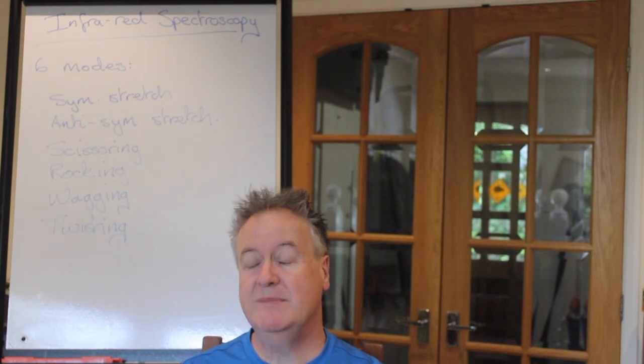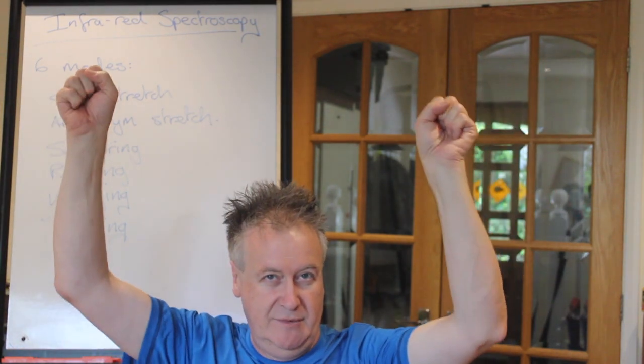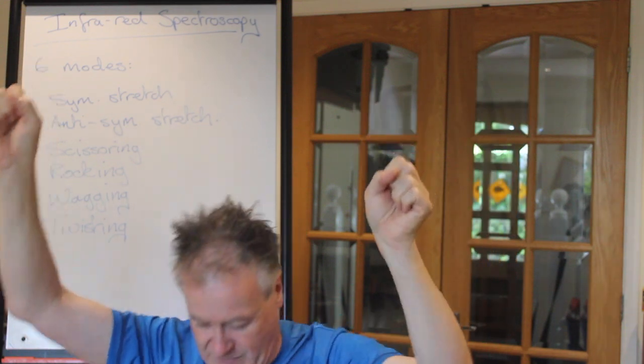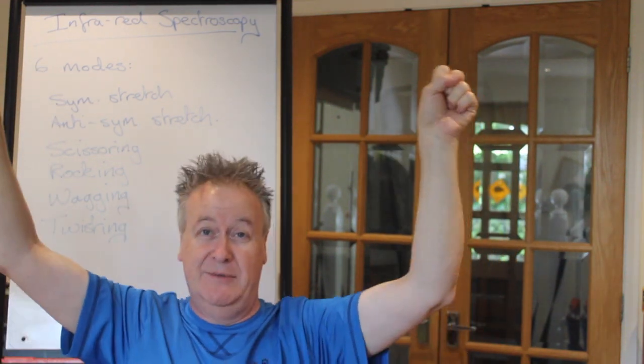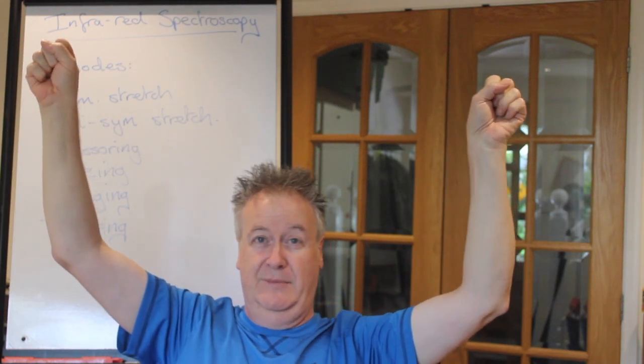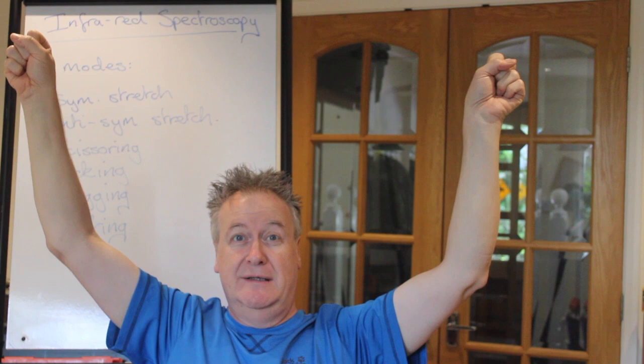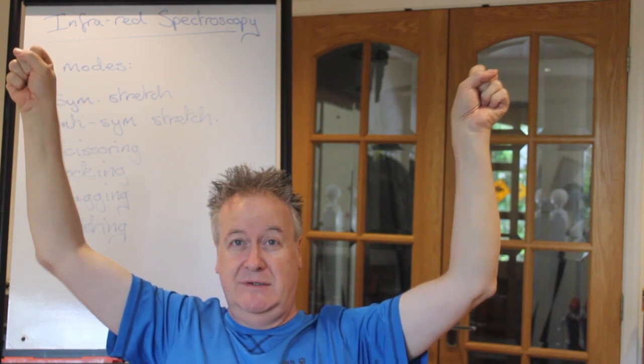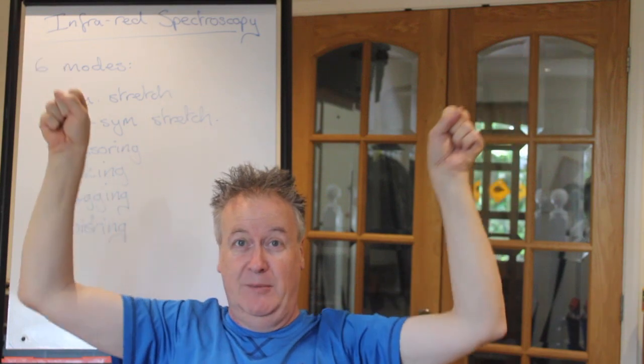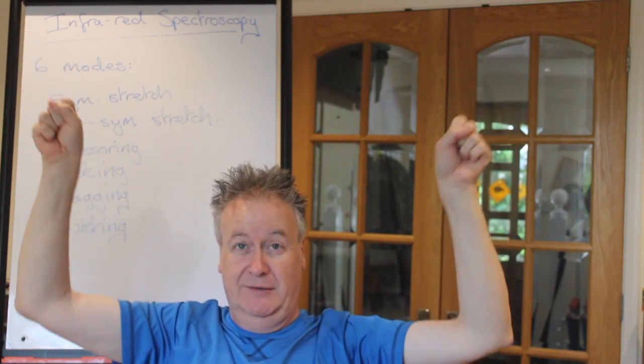So symmetrical. I'm going to use my arms to represent what we are doing. There we go. I'm being pointed at by the camera operator. Right. So symmetrical stretching goes like this. Now technically it doesn't bend at the elbow because it's a bond but it's that kind of movement.